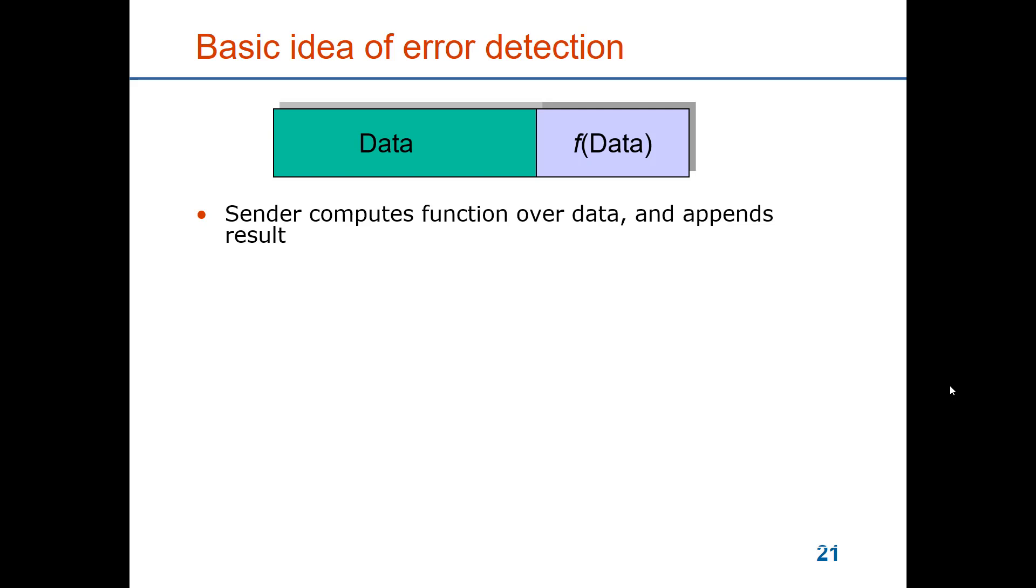The basic idea of error detection is to take the data as a string of bits and compute a function over the data. The result of that function will be appended to the data, and data plus the result of the computation will be sent over to the receiver. The receiver can then compute the same function and compare the results. If they agree, it will decide that the data has been correctly received. If they differ, then there is an error.